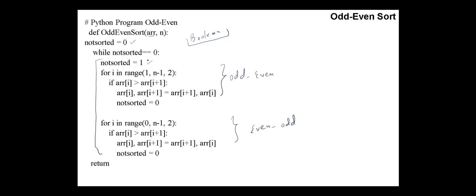We set the sorted to 1 and then start the odd-even phase for i in range(1, n-1, 2). If arr[i] is greater than arr[i+1], then we swap these elements. If we perform any swap operation, then the sorted is switched to 0.